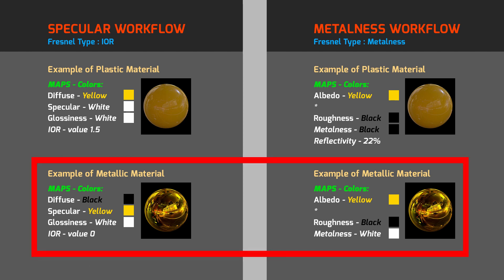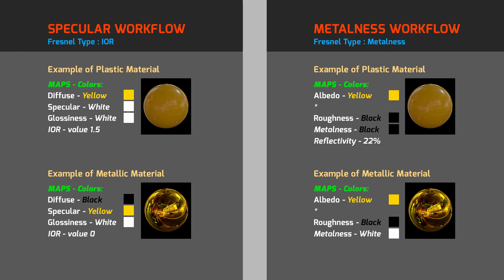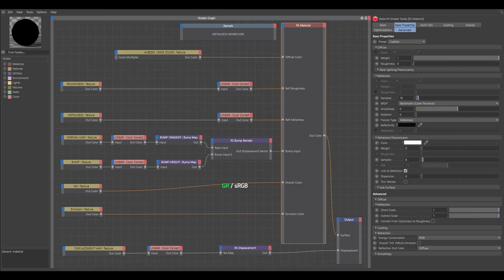The second example is a metallic material. Metallic materials in the specular workflow contain a black diffuse texture — that's the main reason why the specular workflow needs two sRGB textures for correct base color. To match the metallic look from the metalness workflow, I have to use an IOR value of 0 in the specular workflow. For more details on how specular and metalness workflows work, including how to correctly connect all exported textures into the RS material, check out our specular vs. metalness workflow chapter.